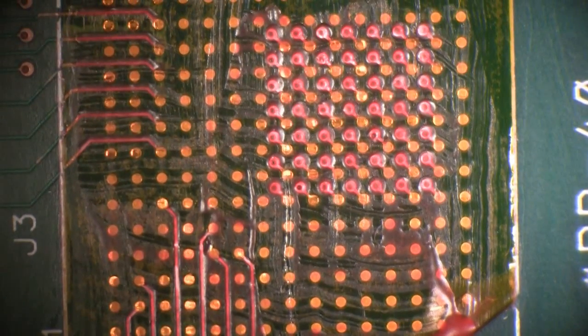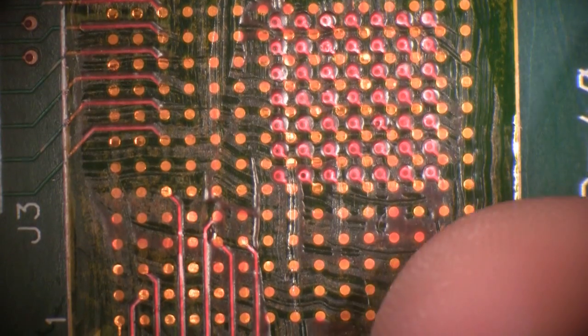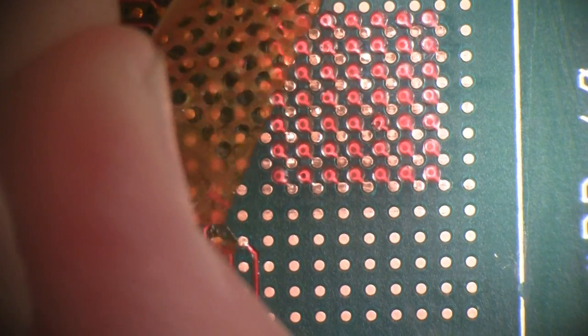Now that we've cured the solder mask under UV curing, the next thing we want to do is remove the stencil. All you do is just grab a corner and just remove it just like this.